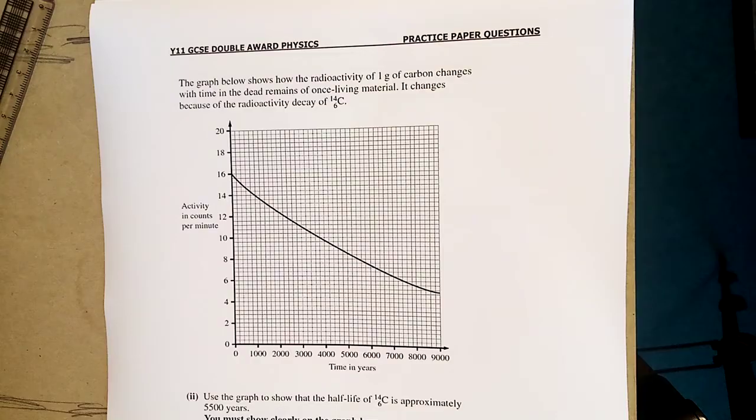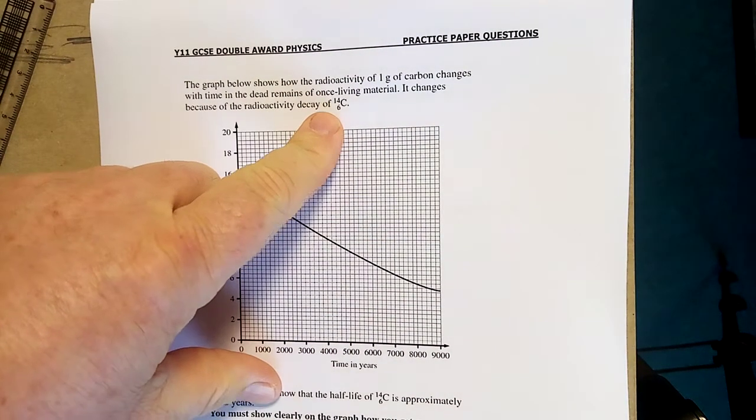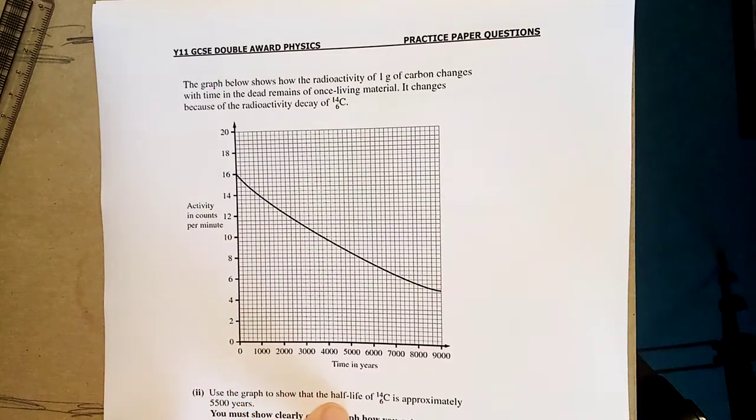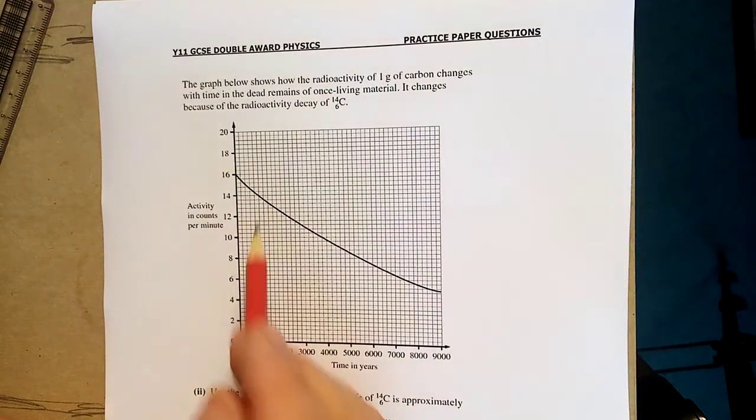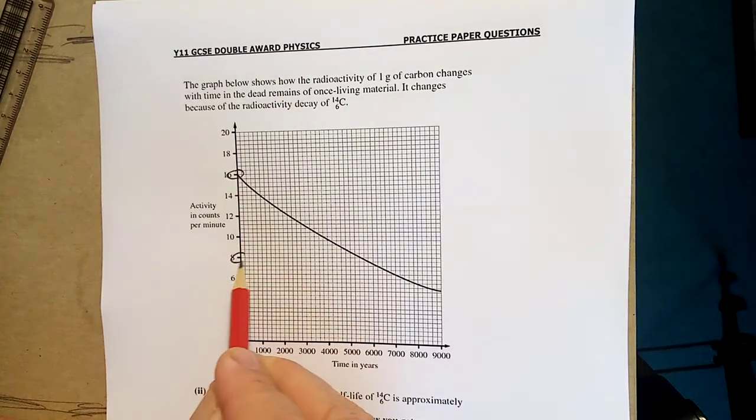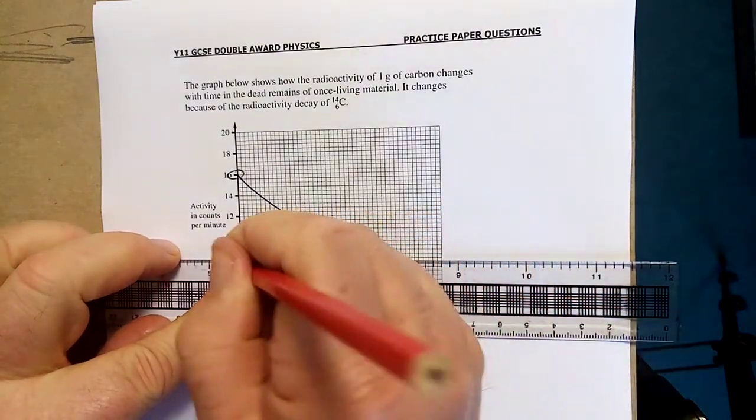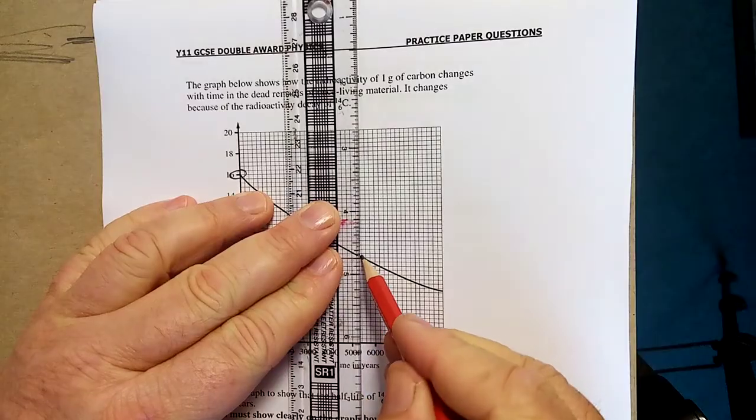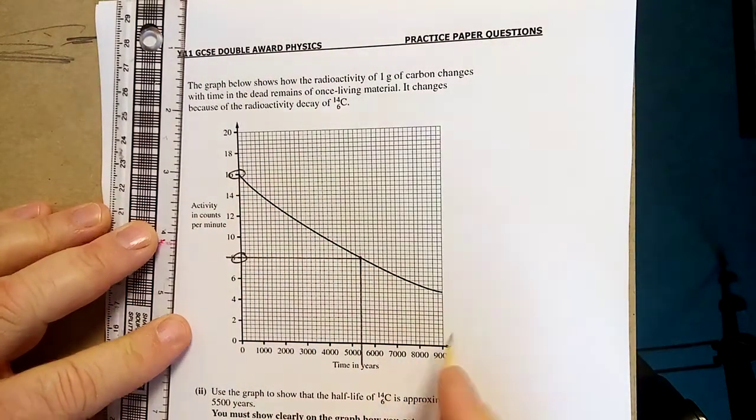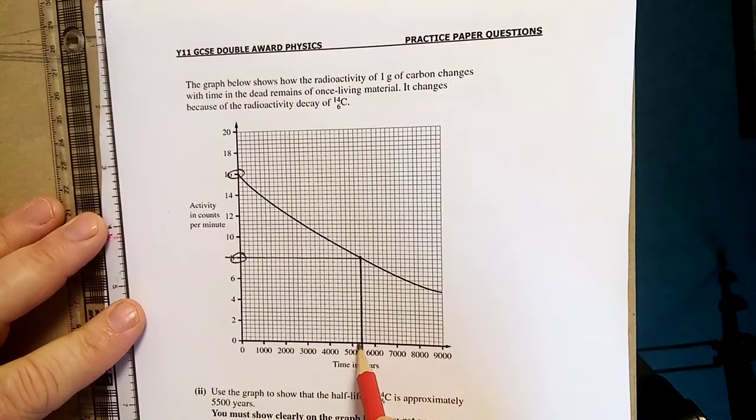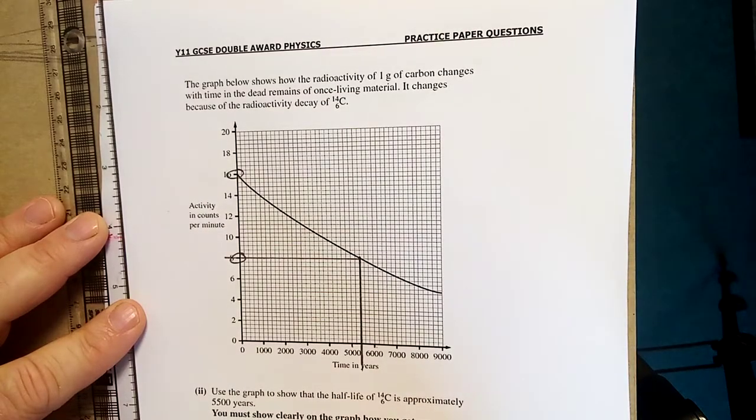The graph shows the radioactive decay of one gram of carbon in the dead remains of a once living material, like myself. It changes because of the radioactive decay of carbon-14. Some of you out there, it's the only date you're going to get - carbon-14 dating. Controversial. Use the graph to show the half-life of carbon-14. That's 16 counts per minute, so the half of that is going to be 8. So, construction line. See the construction line. There's one line across and down. And there you are. That's 5,000, that's 6,000. 5,400 years.